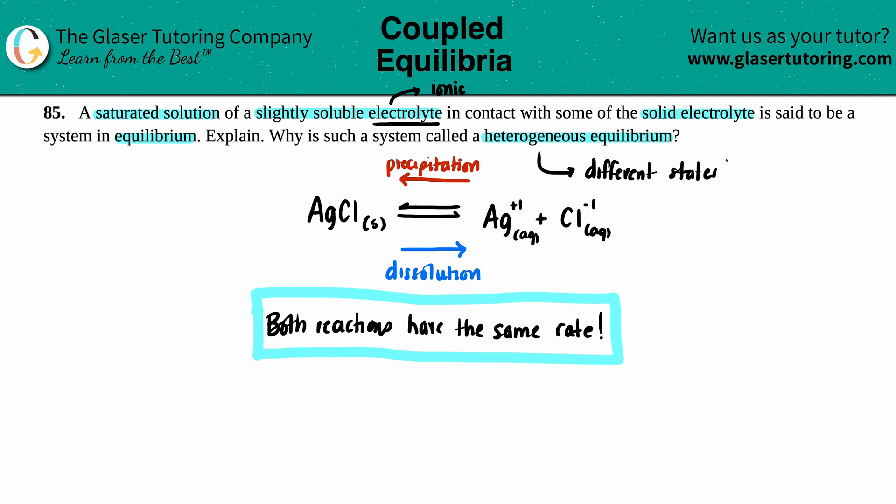If you have different states, you can see the difference. A heterogeneous mixture means you can see the difference between two things—like oil and vinegar, where there are two different layers. Two different states, two different layers—you just have to see a difference. Here, it's heterogeneous because at the same time you have your solid (the precipitate) and you have aqueous solutions. You will see the solid in the sea of ions, and that's why it's heterogeneous.